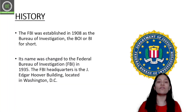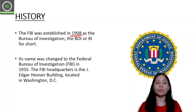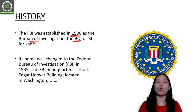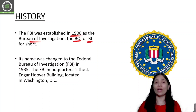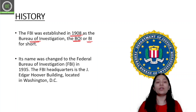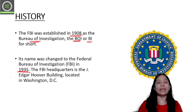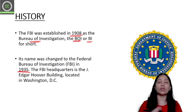Now coming to the history. FBI was established in 1908. Initially its name was Bureau of Investigation, abbreviated as BOI or BI. It was not called FBI at first. The name was changed to Federal Bureau of Investigation in 1935.